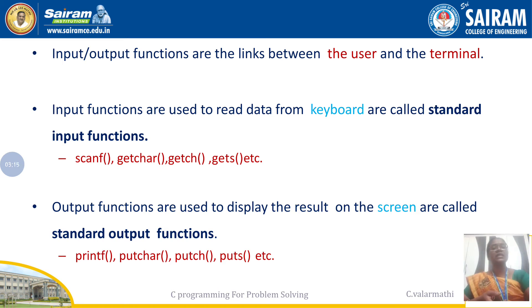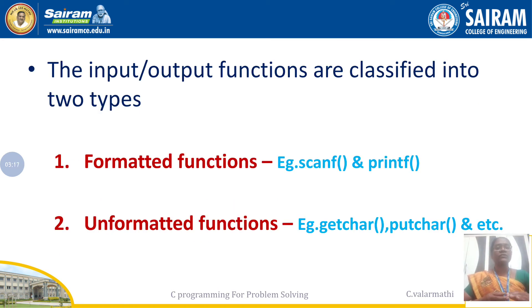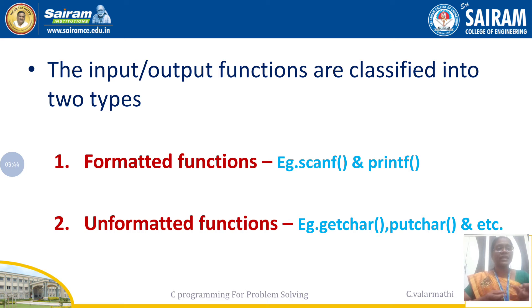Let us see each function in detail. Before that, input and output functions are classified into two types: formatted functions and unformatted functions. Examples of formatted functions are scanf and printf — scanf means scan in a formatted way, and printf means print in a formatted way.